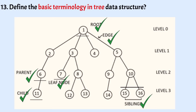The height of a tree is the height of the root node — the height of this tree is 3. The depth of a node is the number of edges from the node to the root node — for example, depth of node 7 is 2.